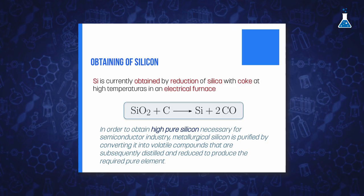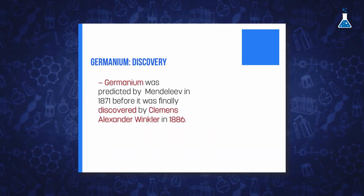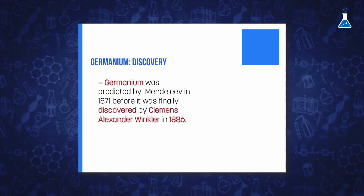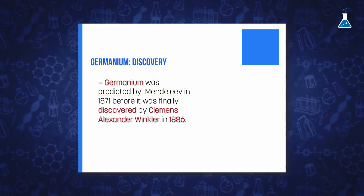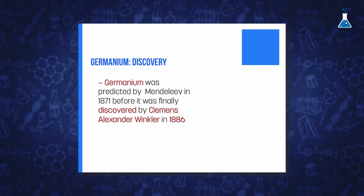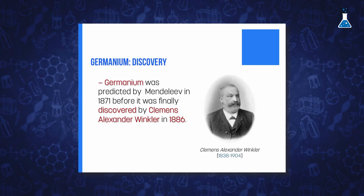Which leads to recovering extremely pure element. The discovery of germanium, although interestingly it was predicted by Dmitri Mendeleev in 1871, before it was finally discovered by Clemens Alexander Winkler in 1886, when he was working on the analysis of a new mineral called argyrodite.